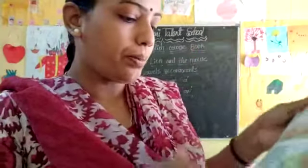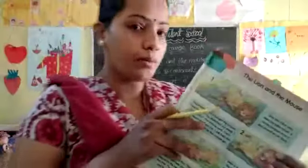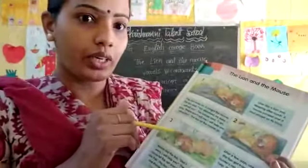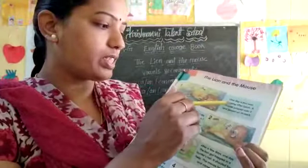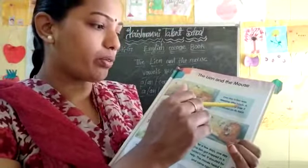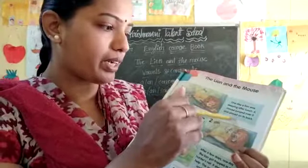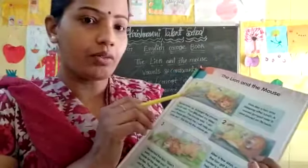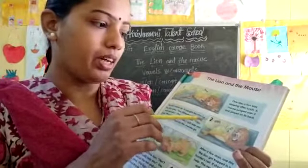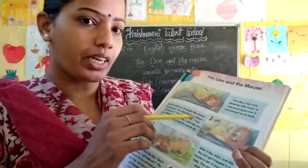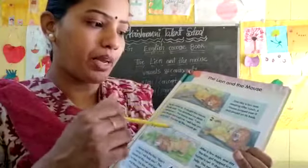Open page number 8. Here is the story: The Lion and the Mouse. One day a lion was sleeping after lunch. A mouse jumped over it and played on its back. What did the mouse do? The mouse jumped over it.